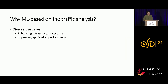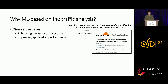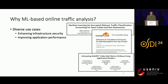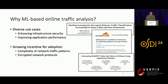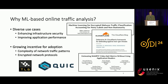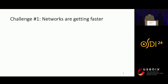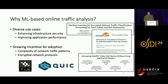Besides this simple security use case, machine learning-based online traffic analysis has been used increasingly in both academia and industry in recent years — for example, to enhance the security of infrastructure and to improve network application performance like video streaming. There's also a growing incentive to adopt these models in production networks, because machine learning models are very good at mining hidden patterns in hyper-dimensional complex network data, and they're compatible with widely used encrypted protocols like TLS and QUIC.